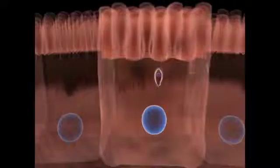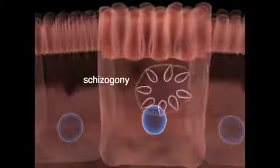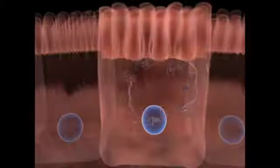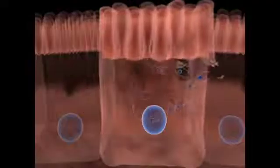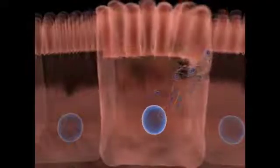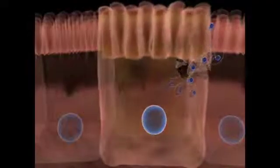Each bradyzoite will settle inside a parasitophorous vacuole and start to divide by schizogony. In this method of division, many nuclear divisions take place, and in the end, the cytoplasm and organelles are equally distributed among the daughter cells, called merozoites. The merozoites leave the host cell and invade new ones, repeating the process.